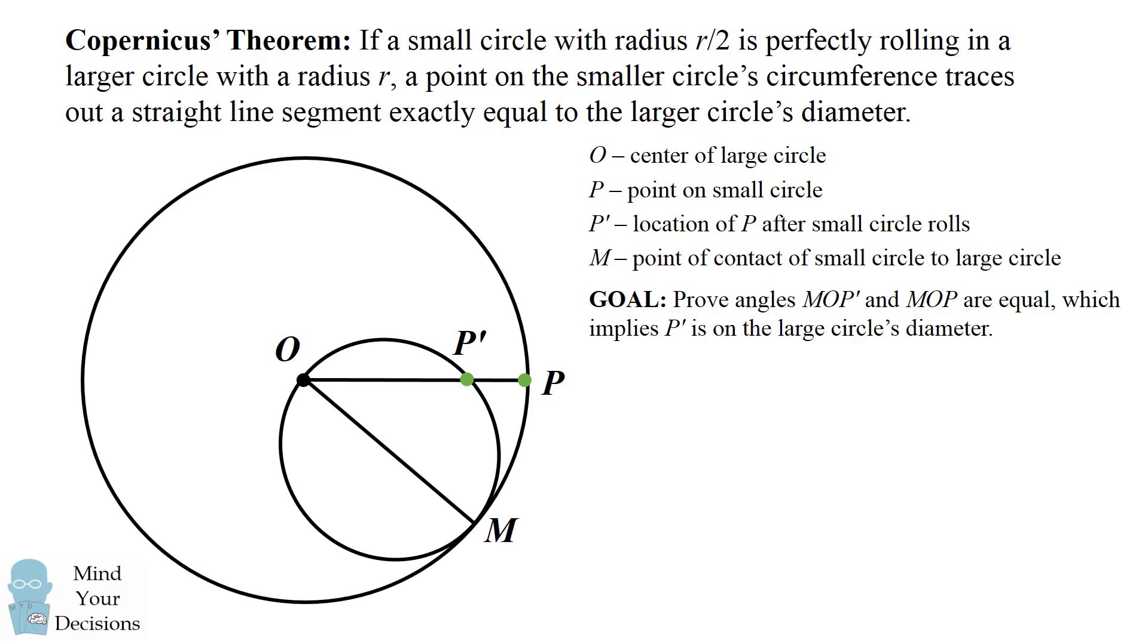And an alternate way of saying that, is we want to prove the angles MOP' and MOP are equal. This will imply that the point P' is on the large circle's diameter.